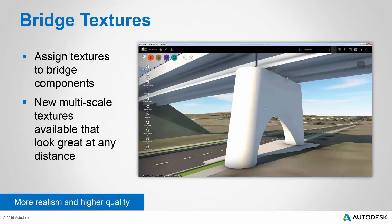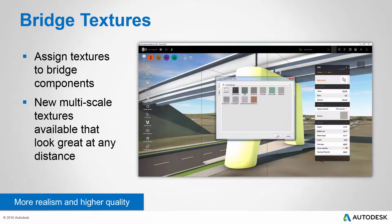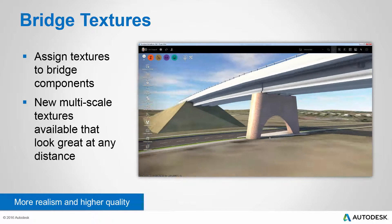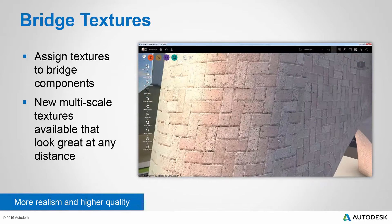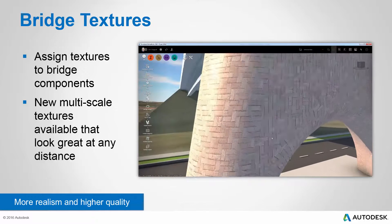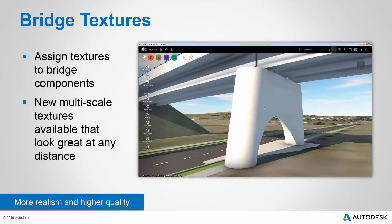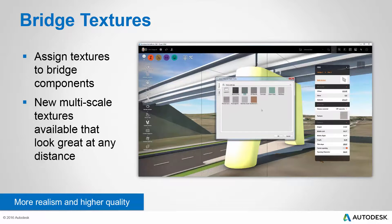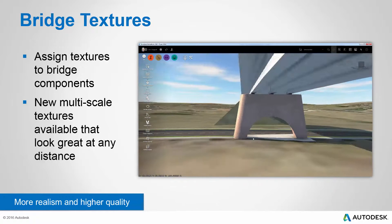Another addition in this update is the ability to assign textures to your bridge components. In the example video, we're assigning a brick texture to a pier. The textures themselves are multi-scale, which means you can zoom in very closely and they look great, or zoom out and they still look great — they actually change as your view distance changes. We introduced multi-scale textures a release or two ago, but we're expanding them and adding more in this version. This allows you to create more realism and higher quality in the appearance of your models.